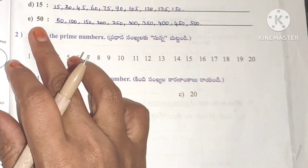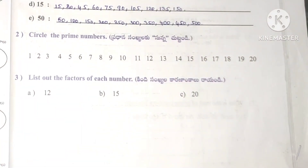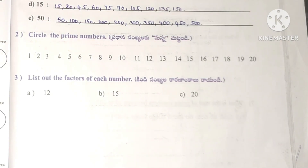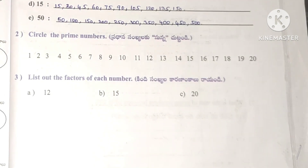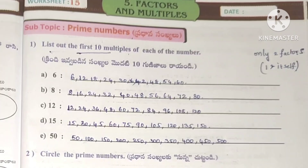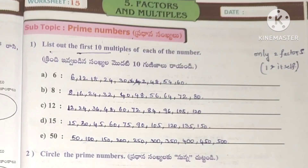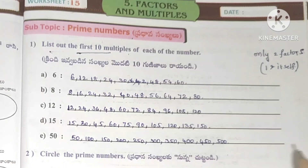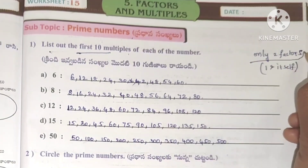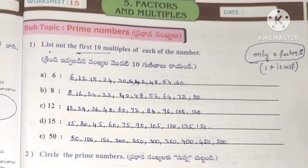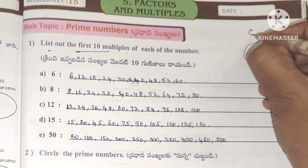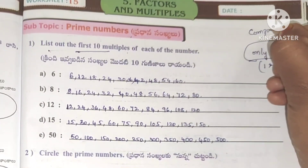We also know that 50 is the first 10 multiples. Next step: circle the prime numbers. The numbers listed are prime numbers. Prime numbers have only 2 factors.